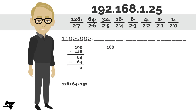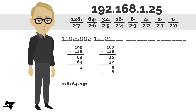The next one, the 168 — again, 128 will fit, so we'll have something in the 128's position. Take 128 away from 168, the remainder is 40. Well, 64 will not fit into 40, so I can't put anything there, but 32 will fit. So I can put something in the 32's position. Take 32 away from 40, the remainder is 8. Well, 16 is too large, but 8 fits into 8. So 8 away from 8, the remainder is 0, so I can have 0's in the remaining positions.